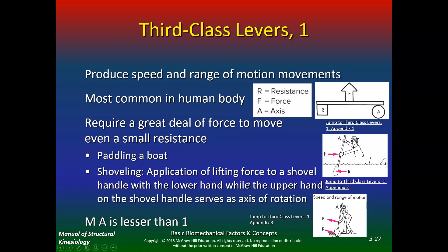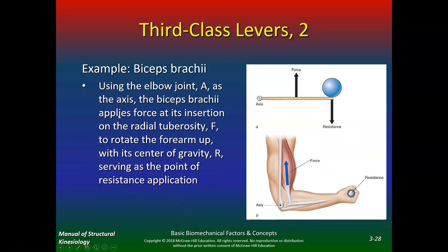Paddling a boat and shoveling are examples of third class levers — applying lifting force to the shovel handle with the lower hand while the upper hand on the shovel serves as the axis of rotation. For the biceps brachii, the elbow joint is the axis, the biceps applies force at its insertion on the radial tuberosity, and the center of gravity of the forearm serves as the point of resistance. That weight in your hand could be a dumbbell.